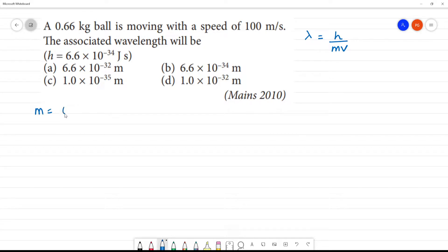m is equal to 0.66 kg. Velocity is equal to 100 m per second, which is 10 square meter second inverse.